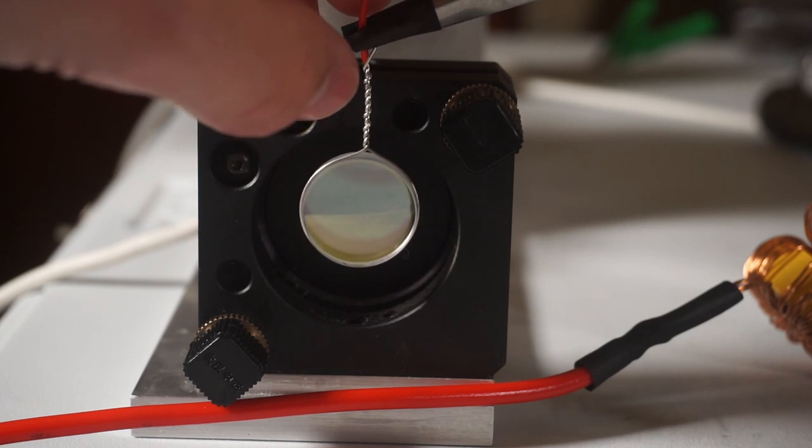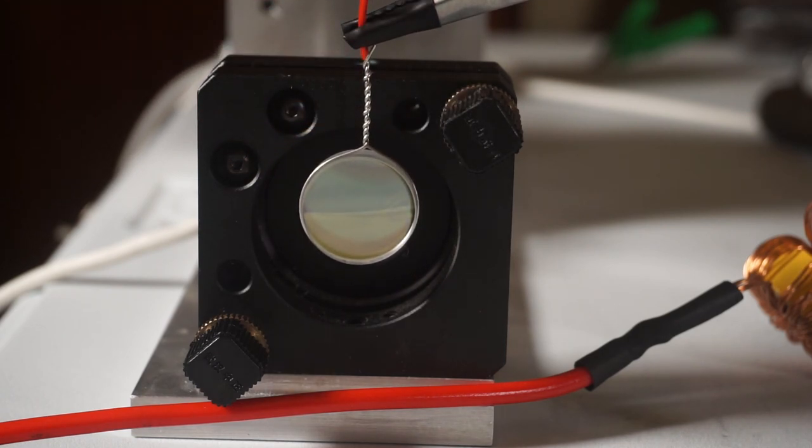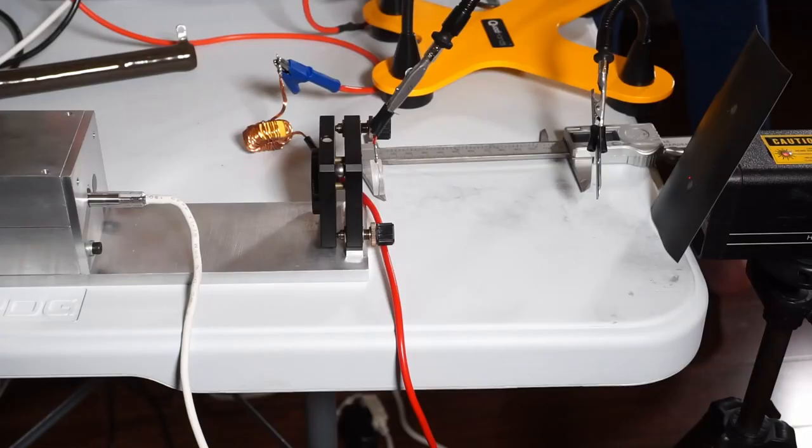With the beam aligned-ish, I could add a lens to the equation and put something at the focal point. Starting with the canonical homebrew laser benchmark, a carbon steel razor blade. Which this laser had no trouble vaporizing a hole right through.